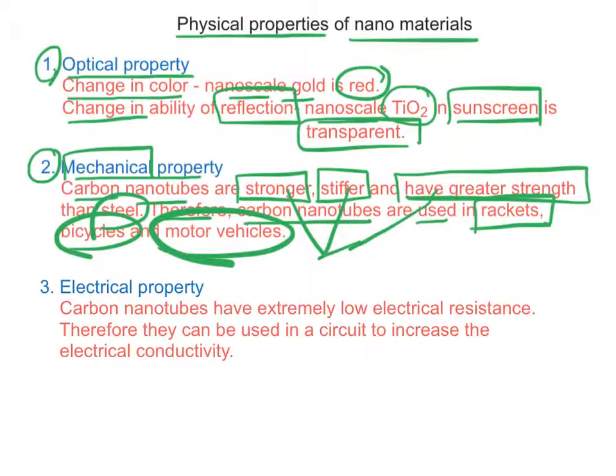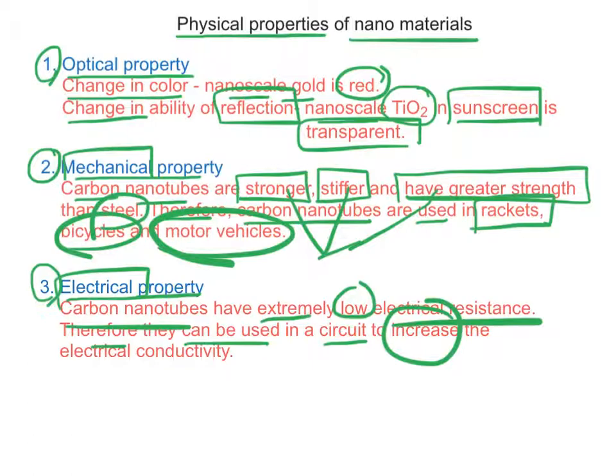Next, electrical properties. Carbon nanotubes have extremely low electrical resistance, therefore they can be used in a circuit to increase the electrical conductivity.